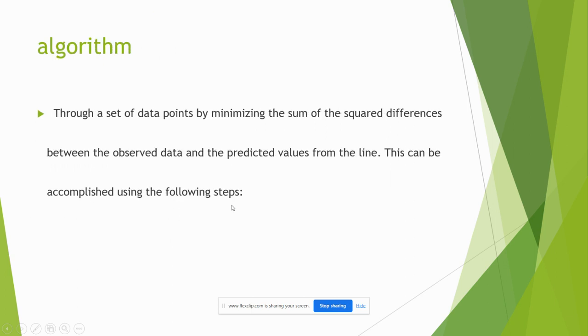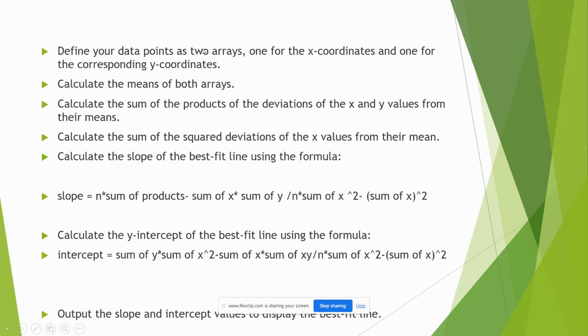The algorithm for linear regression model. These are the steps. First of all we have to find two arrays, one for X coordinates and one for corresponding Y coordinates.